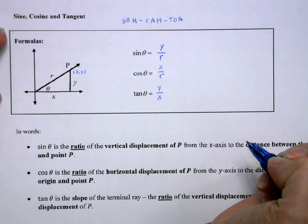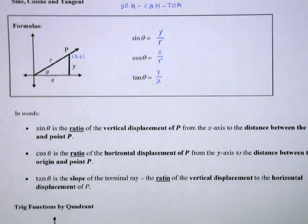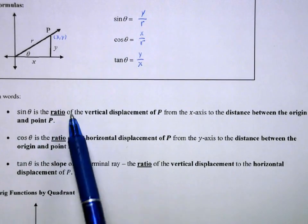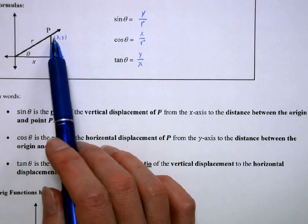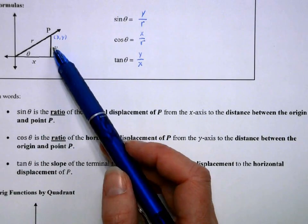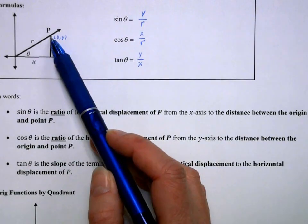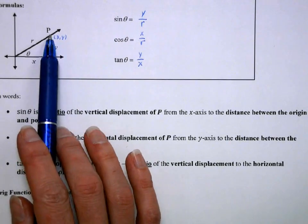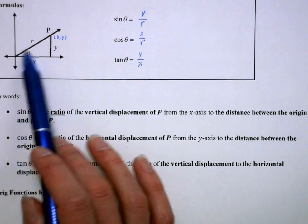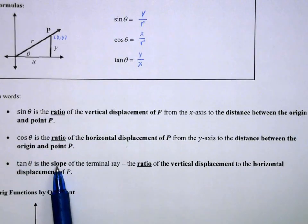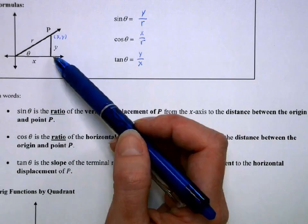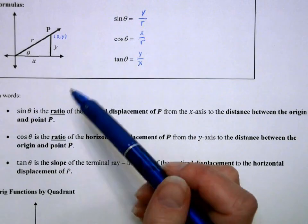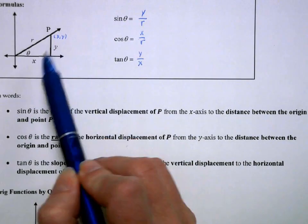Okay, so again, you can use right triangle trig a little bit more formally. Sine of theta is the ratio of the vertical displacement of P from the x-axis to the distance between the origin and the point, which is our r. Cosine is the ratio of the horizontal displacement to P and the distance between the point and the origin. Tangent is the slope of this line. Okay, think about it. Slope is rise over run. So, if I have y over x, that's slope. It's the ratio of the vertical displacement over the horizontal displacement.